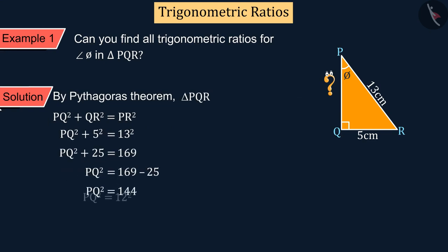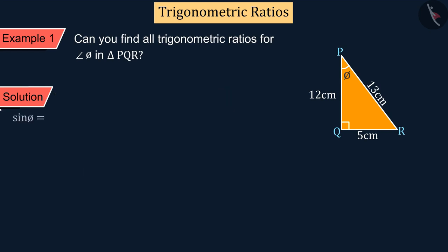From this, we get the length of PQ as 12 centimeters. Now we can find the trigonometric ratios for angle θ. Can you tell me what those ratios are? Well done. These are sine, cos, tan, cosec, sec, and cot.